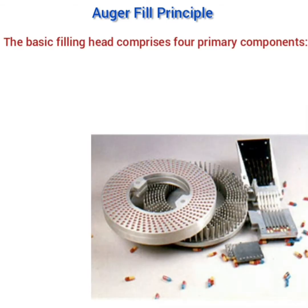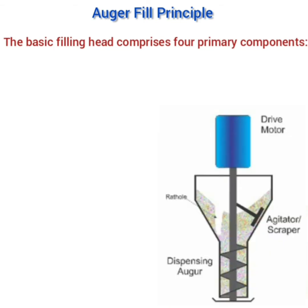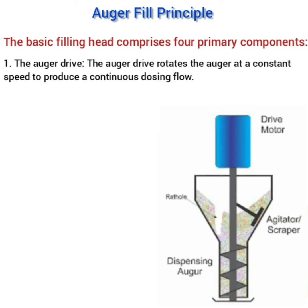First, we place the empty capsules in the ring and place this ring on the turntable below the hopper. The first important component is the auger drive, which rotates the auger at a constant speed to produce a continuous dosing flow. The auger, which is a screw, rotates and moves the product from the hopper to the capsule bodies.